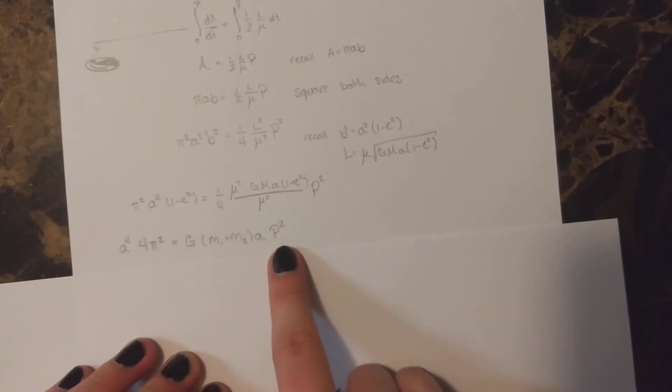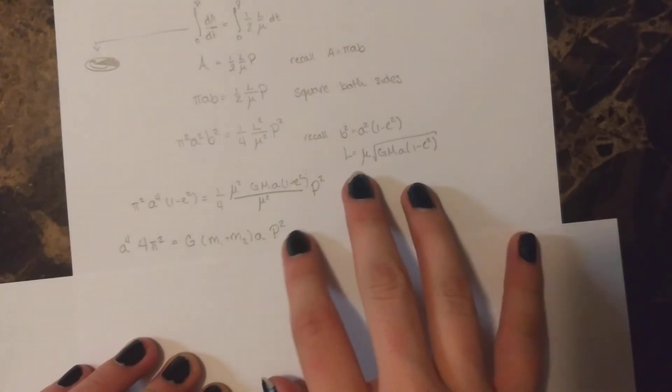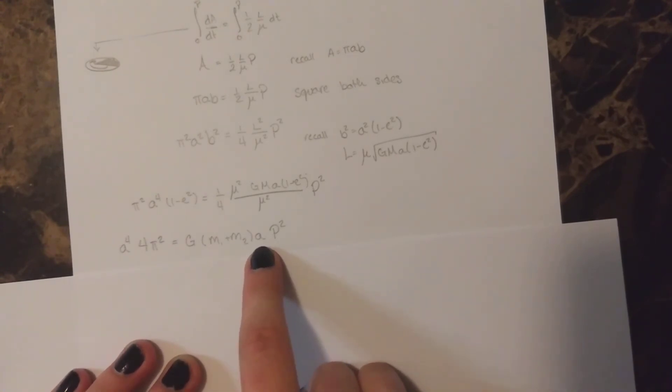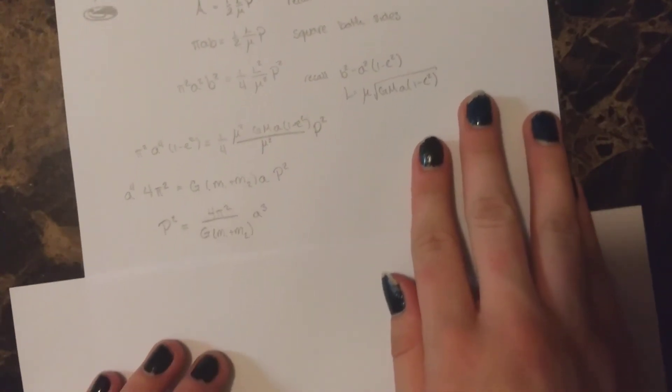And if we divide everything except for the period squared on this right-hand side to the G times the summation of the masses times the semi-major axis, we divide all that over to this side, we end up with our original claim.